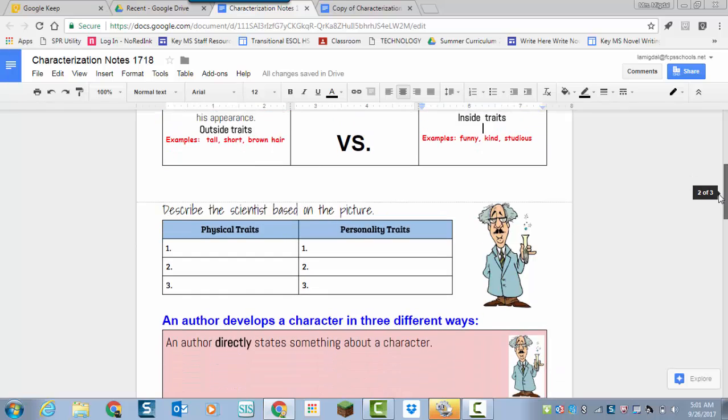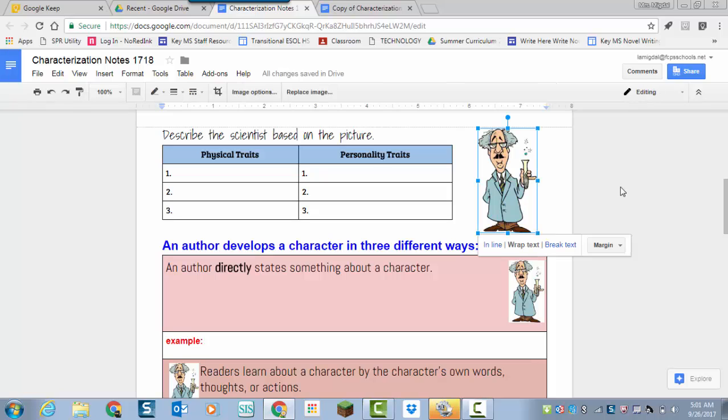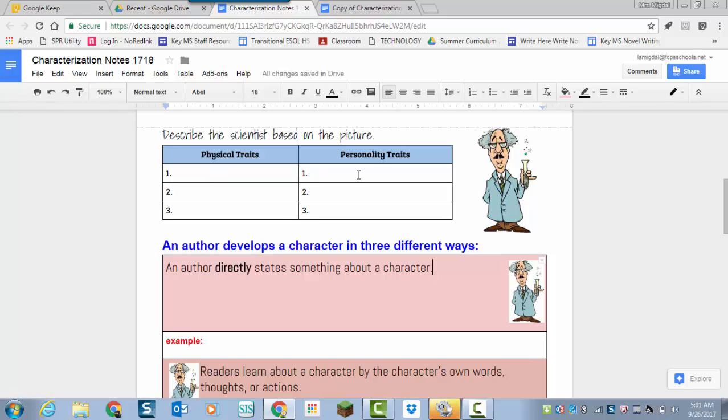And the author has to let us know that. So let's look at an example. This is my friend, Dr. Frank. And he is a scientist. So Dr. Frank has some physical traits and some personality traits.